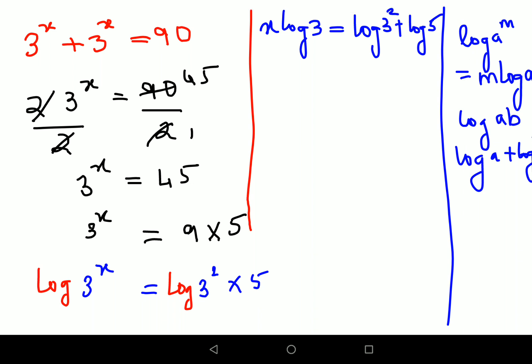Next, we'll keep x log 3 as it is and here we'll get 2 log 3 because I'm using the same property of indices, and I'll keep log 5 as it is. Now in order to find the value of x, I will divide both sides by log 3.